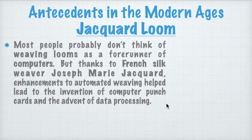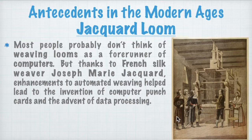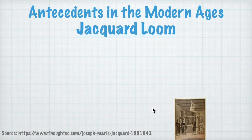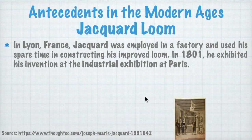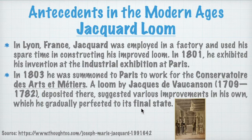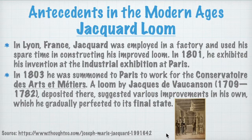This is the loom that Joseph Marie Jacquard made. He was French, employed in a factory, and used his spare time constructing his improved loom. In 1801, he exhibited his invention at the industrial exhibition in Paris, France. In 1803, he was summoned to Paris to work for the Conservatoire des Arts et Métiers, where he gradually perfected the loom to its final state.